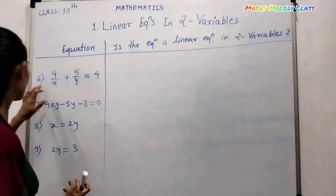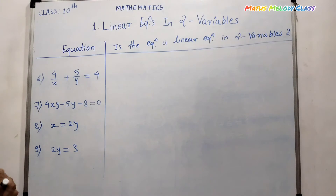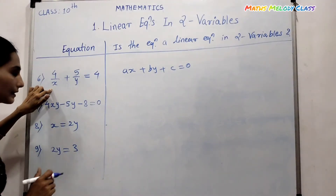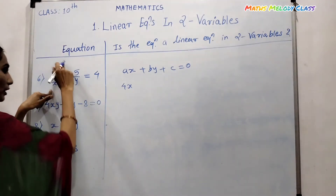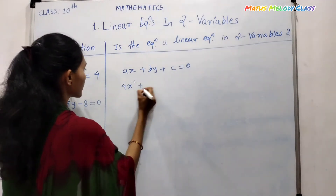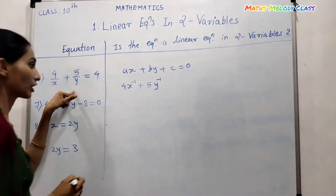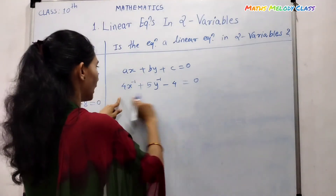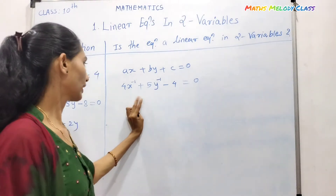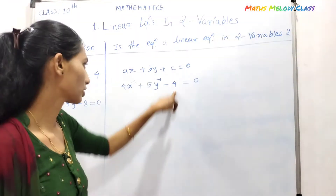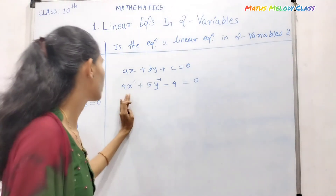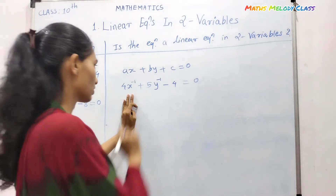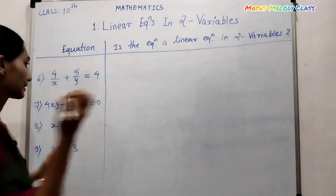Consider: 4 upon x plus 5 upon y equals 4. Can we write this in the form ax plus by plus c? Here 4 over x means the power of x becomes minus 1, and similarly the power of y becomes minus 1. So when we rewrite this in general form, the degree of the variables is minus 1, not one. Hence we can say this is not a linear equation — no.